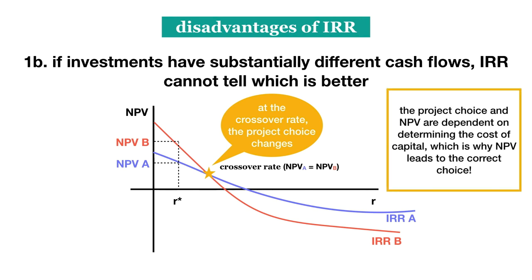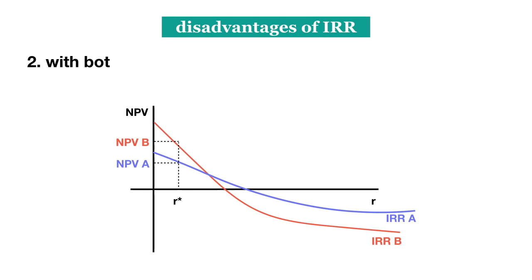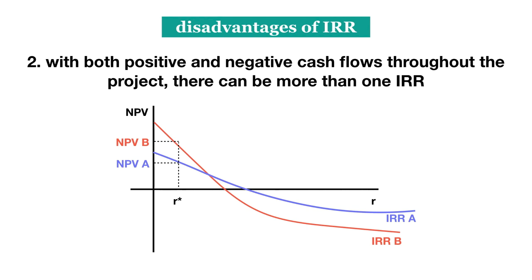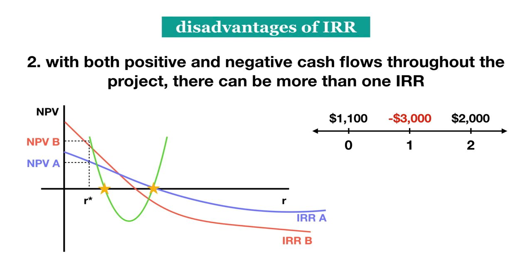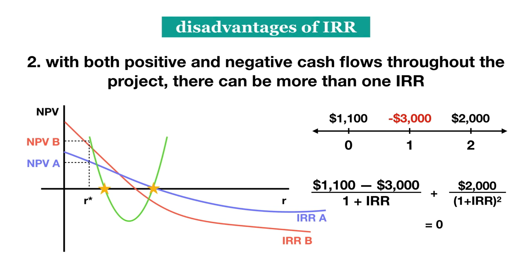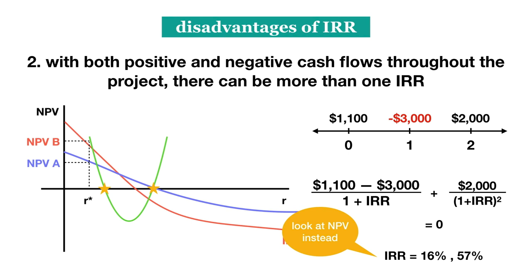Second, if the project has both positive and negative cash flows throughout the life of the project, it can actually have more than one IRR. The project's NPV function at different discount rates becomes a polynomial function rather than a straight line, meaning that it can intersect the x-axis at more than one point. Thus, there can be more than one rate that will result in an NPV of zero. For example, suppose an investment pays $1,100 today, requires a payment of $3,000 in one year, and then returns $2,000 in two years. Setting NPV equal to zero: $1,100 − $3,000/(1+IRR) + $2,000/(1+IRR)² = 0. This equation has two solutions: IRR equals 16% and IRR equals 57%. Thus, we should look to the NPV of this investment instead to determine whether it is a worthwhile opportunity.